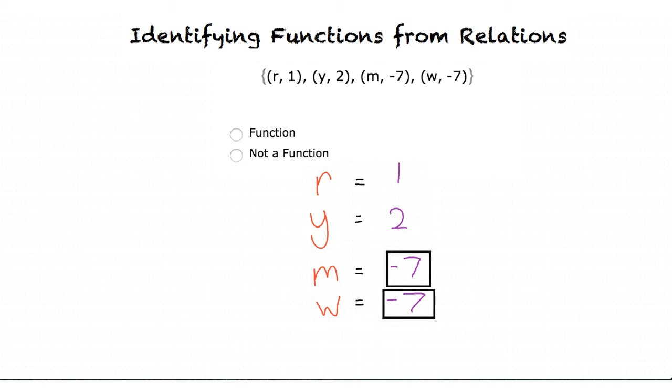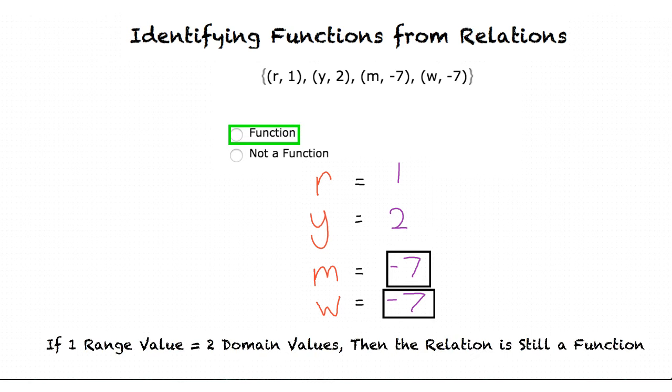While negative 7 is attached to more than one value in the domain column, the relation is still a function since values in the range can be attached to more than one value.